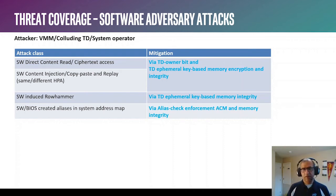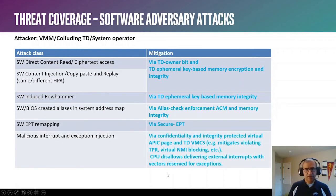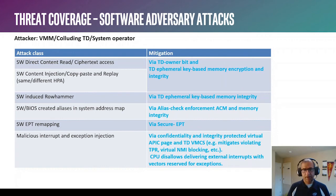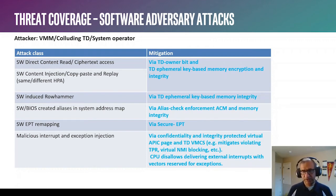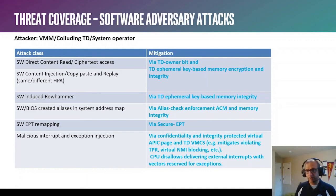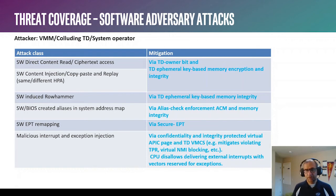Address translation attacks through software-based EPT remapping are addressed through the secure EPT architecture. Malicious interrupt or exception injection by the VMM to cause invalid execution inside the TD is mitigated by the TDX module protecting the virtual APIC page, thereby preventing violation of TPR levels or virtual NMI blocking by the VMM, and protecting TD control structures through confidentiality and integrity protected memory. The CPU also enforces disallowing external interrupts with vectors reserved for exceptions, which is a change over the previous VMX architecture.